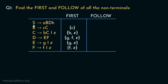Now let's figure out First of S. The production rule is: S can be rewritten as lowercase a followed by uppercase B, uppercase D, and lowercase h. So First of S will have the terminal symbol a. These are all the Firsts of all the non-terminals.